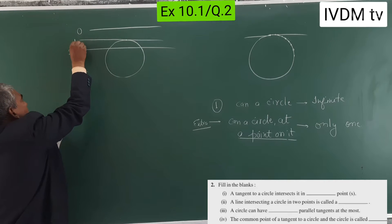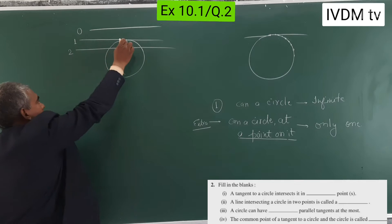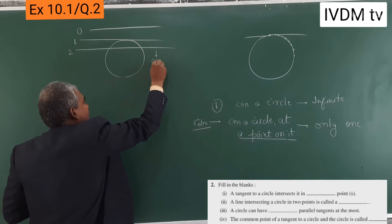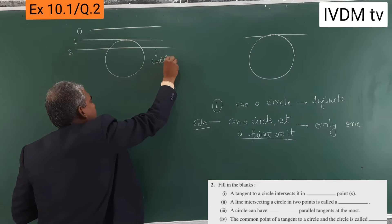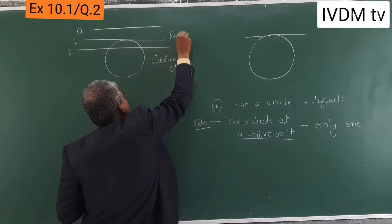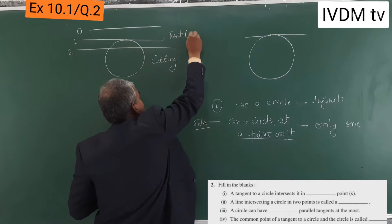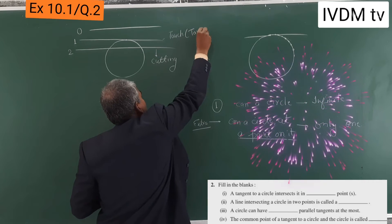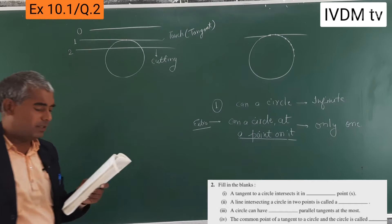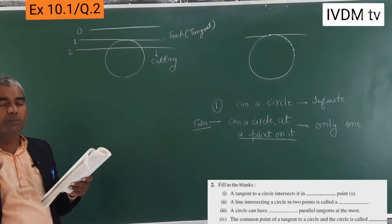The tangent does not cut — actually it touches. It is intersecting, but it is only touching. Touch — and this is the tangent. So a tangent to a circle intersects it in one point.